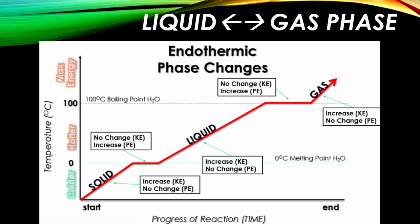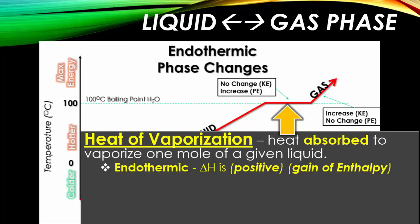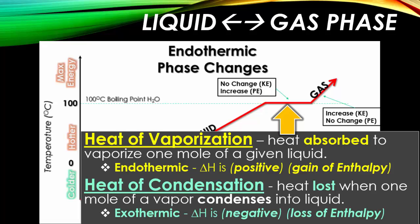The next phase change is between the liquid and gas phase, where we have the heat of vaporization. Heat of vaporization is the amount of heat absorbed to vaporize one mole of a given liquid. This is an endothermic reaction, so delta H is positive, meaning we are gaining enthalpy. The reverse — the heat of condensation — is the amount of heat lost when one mole of a vapor condenses into a liquid. Because heat is leaving the system, it is exothermic and delta H is negative.